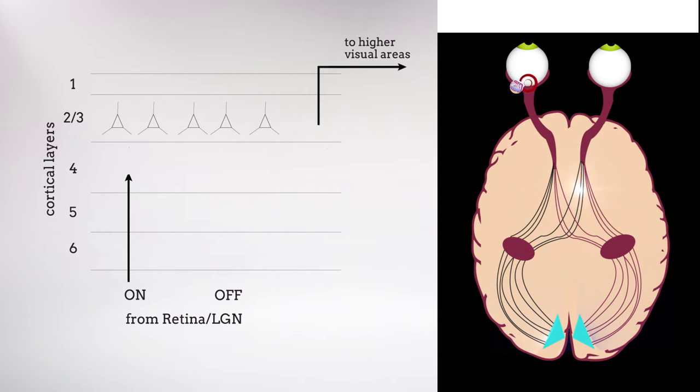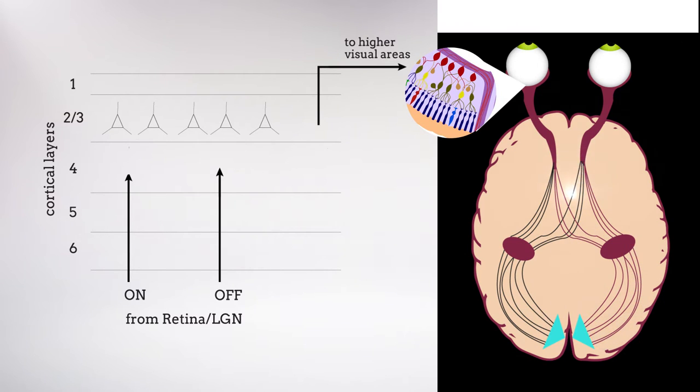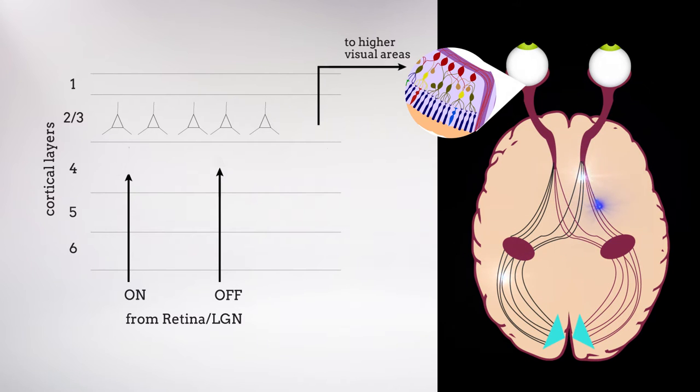On cells in the retina respond selectively to bright stimuli, and off cells respond selectively to dark. From these cells, information about bright and dark enters the brain through separate channels. However, once the on and off pathways enter the visual cortex, the processing of light and dark gets murky.